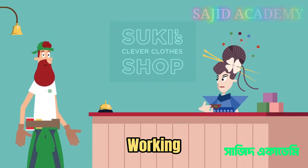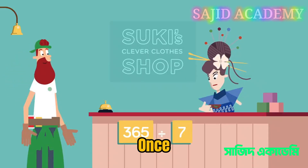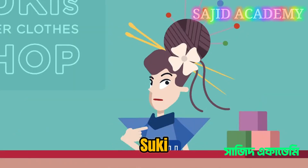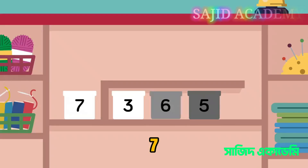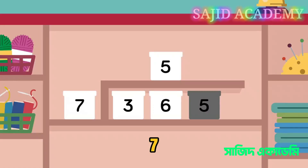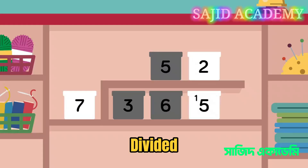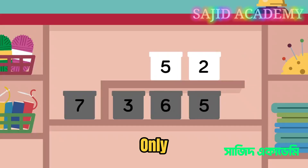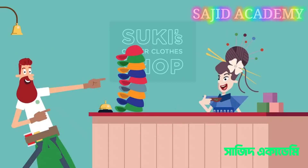Marty's going to be working at the zoo for a whole year — that's 365 days. But once every week, that's once in every seven days, his cap gets stolen. How many caps is Marty going to need, Suki? You could use short division to work it out. Firstly, 3 divided by 7 doesn't go. But 36 divided by 7 goes five times, leaving a remainder of one. Now move on to the 15, which divided by 7 goes two times with a remainder of one. The answer is 52 remainder 1. Why not round down, as there are only 52 weeks in a year? Marty is really pleased that you have enough caps, Suki. But I wonder where they all end up?